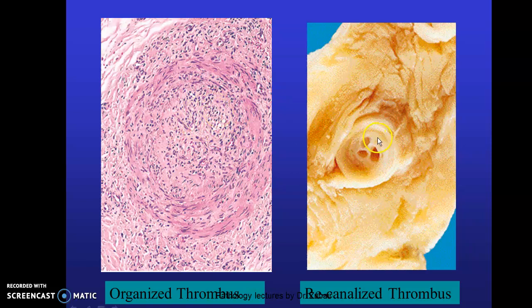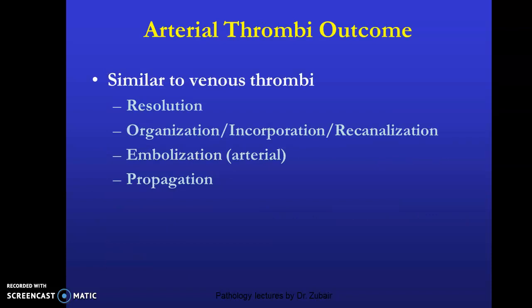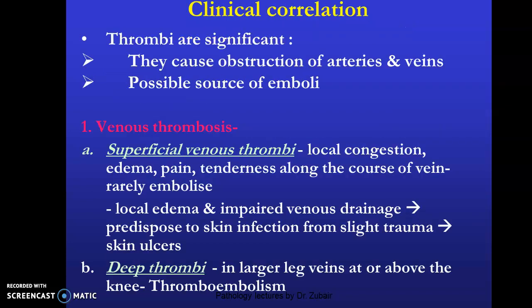Re-canalization is also possible — you can see the blood vessel with the thrombus and multiple smaller channels forming within it; this is the re-canalized thrombus. Arterial thrombi are usually occlusive, seen in the coronary, cerebral, and femoral arteries, superimposed on an atherosclerotic plaque or vascular injury. They are firmly adherent to the wall, grey-white and friable, composed of an entangled mesh of platelets, fibrin, RBCs, and degenerating leukocytes. The fate of arterial thrombus is similar.